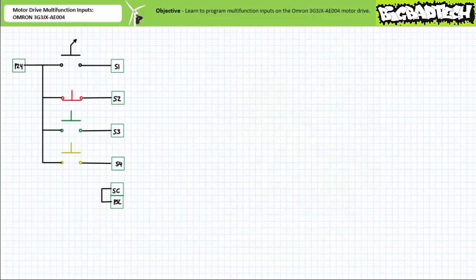Given we're limited to four devices in this enclosure, we don't have room for an external speed potentiometer. However, if you had room, you could wire that up for remote operation also, as well as a fifth input device for the remaining multifunction digital input S5. This being said, four inputs is more than enough for our purposes.